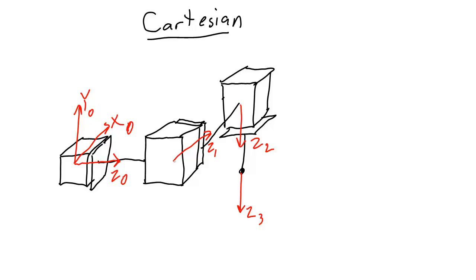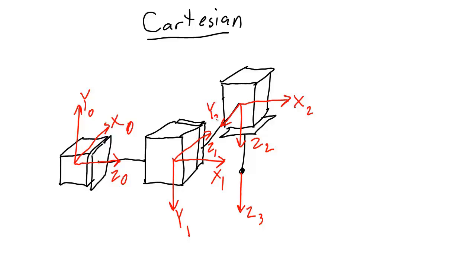For this next frame, I'm going to make x be moving to the right. Using the right-hand rule: if I put my thumb pointing into the page and my fingers pointing to the right, that leaves my palm pointing down, so y1 would have to be pointing down. For the 2 frame, I'm going to make x be pointing to the right. So if I point my thumb down and my fingers to the right, that leaves the palm of my hand pointing out of the page, so I'll draw y in that direction.